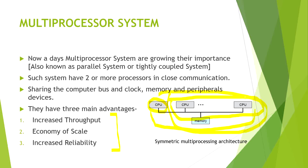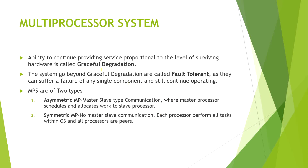The ability to continue providing service proportional to the level of surviving hardware is called graceful degradation. If one CPU fails, others give equivalent performance as the full system was giving. If the system goes beyond graceful degradation, it is called fault tolerant. Fault tolerant means the system can give equivalent output as a fully working system would give, because it can tolerate the fault in the processors.